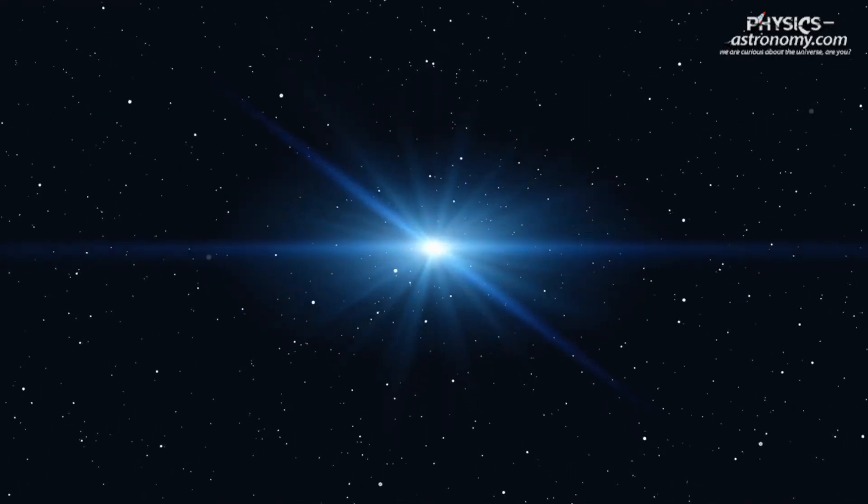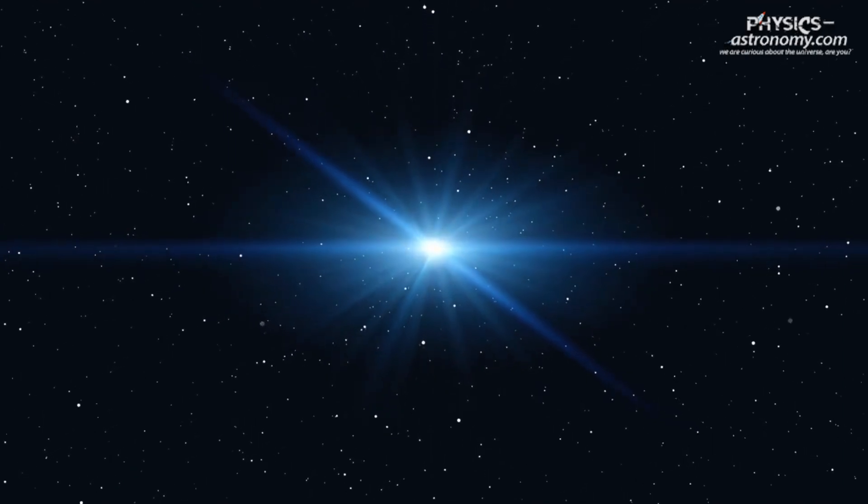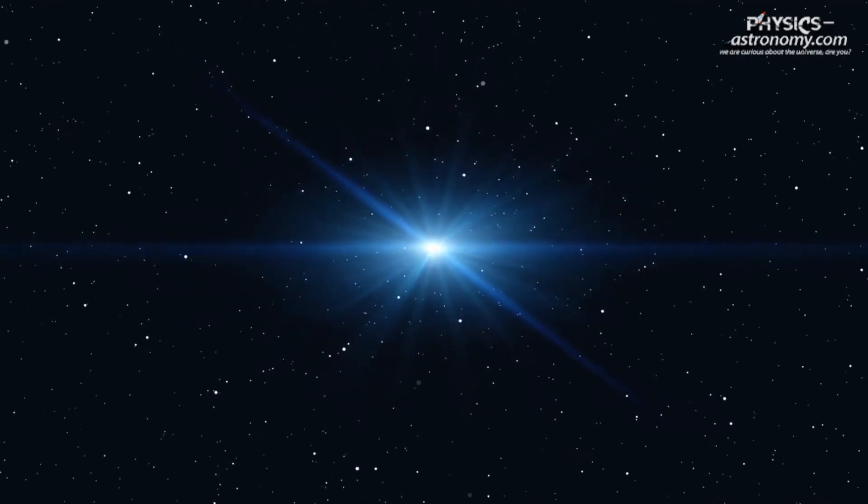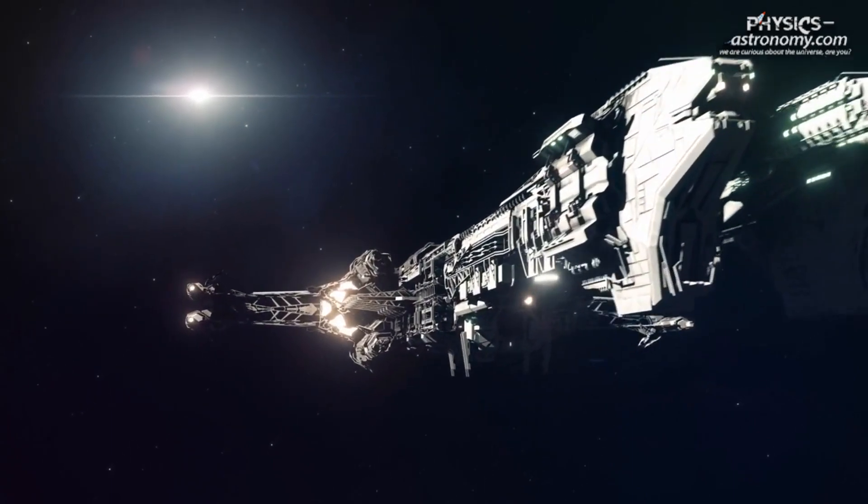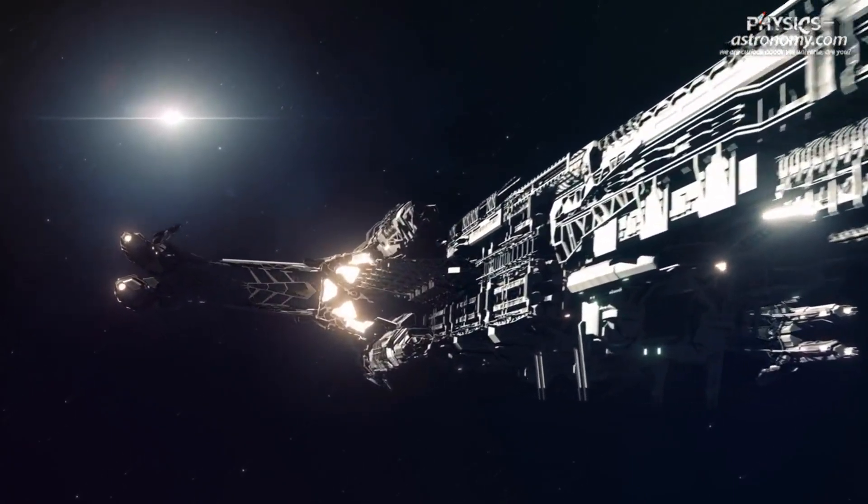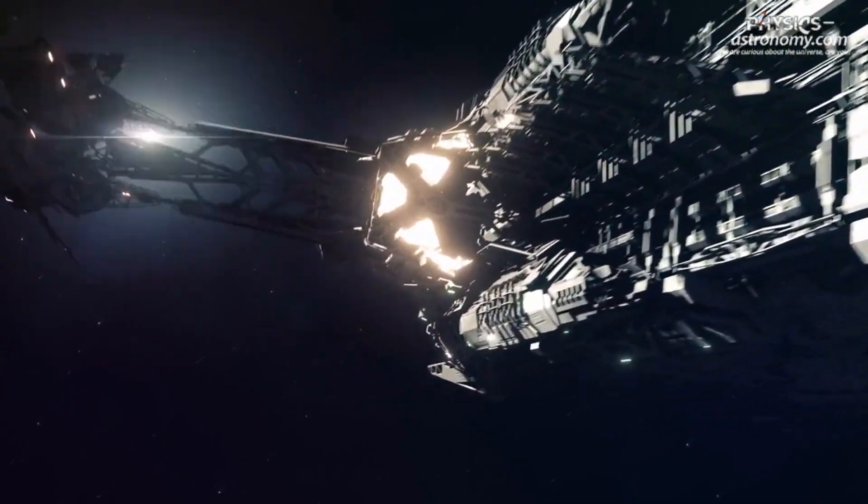The nearest star and planetary system to Earth, Alpha Centauri, is 4.37 light years away. With current technology, it would take a human about 6,000 years to get there. But what if we could reduce this to decades?